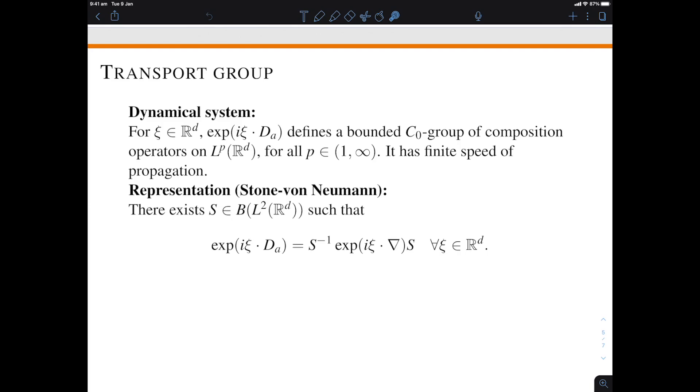You have an explicit expression of that as a composition operator. Now we need to know more about this transport group and the first thing we have which is extremely helpful for the L^2 analysis is that in L^2 it is similar to the classical translation group. We get that out of the Stone-von Neumann theorem by explicitly constructing a position operator adapted to this non-standard momentum operator and then applying the Stone-von Neumann theorem to get that similarity.